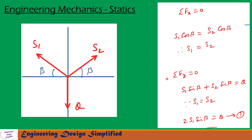Now let us see sigma Fy equal to 0. Along the vertical axis, we have S1 sin beta plus S2 sin beta, both acting upwards, equal to Q acting downwards. Since S1 equals S2, substituting gives us 2S1 sin beta equal to Q. Let us call that equation 1.